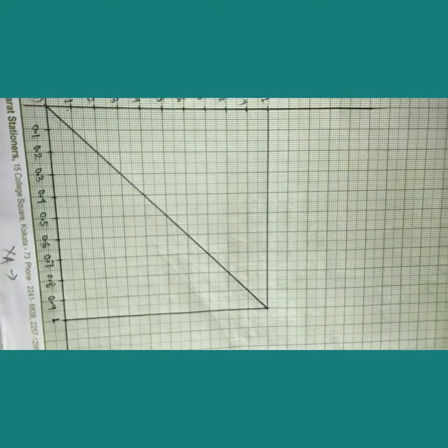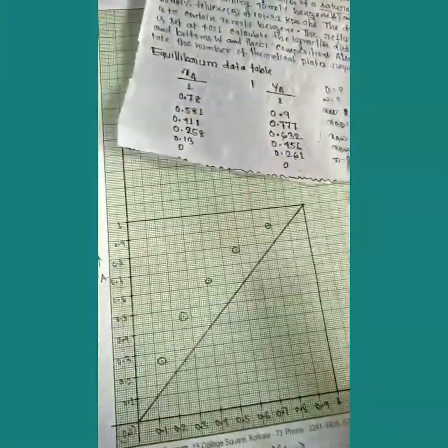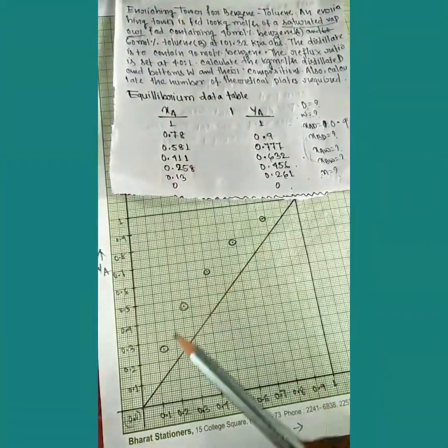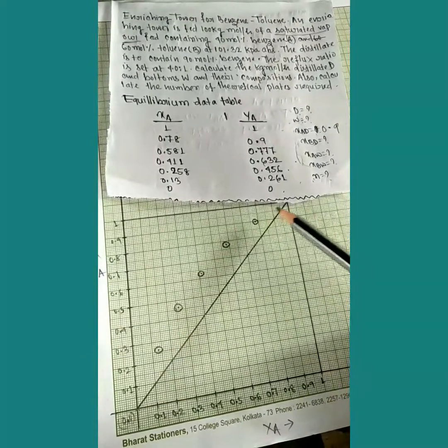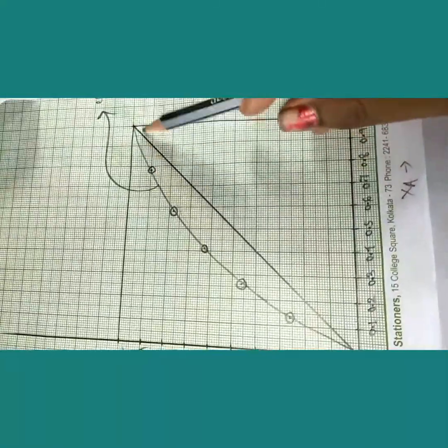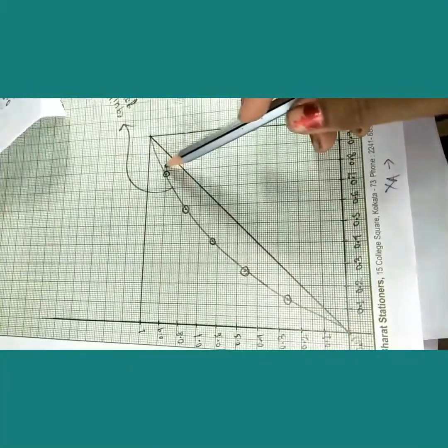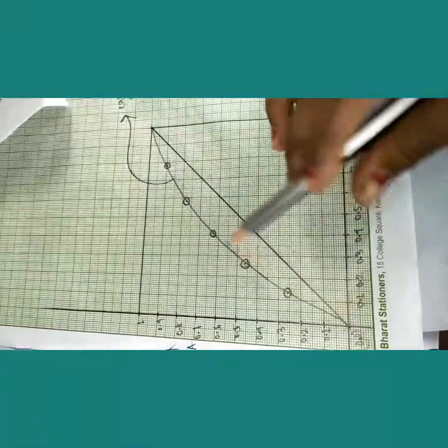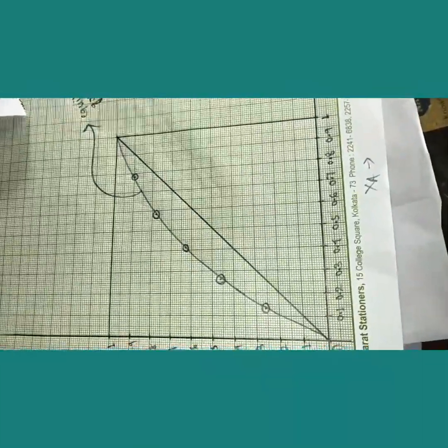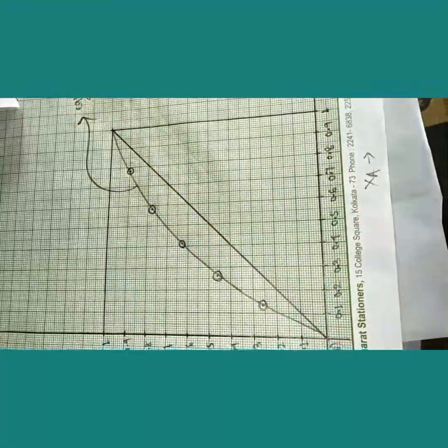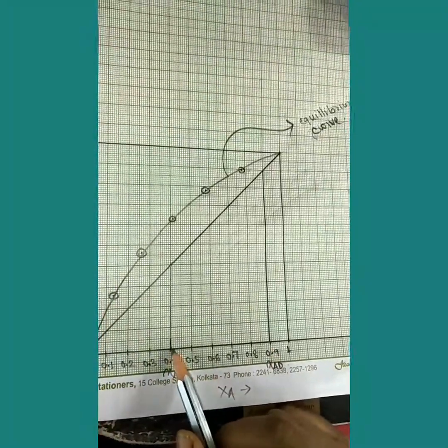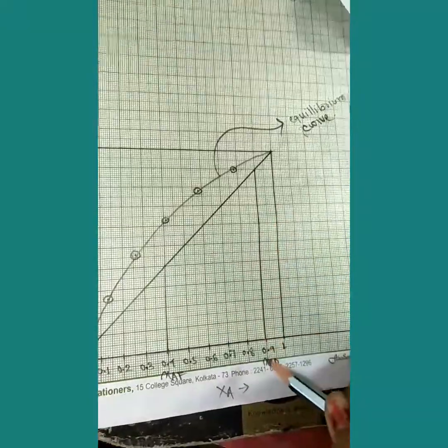After drawing the square box, make a 45-degree line here. Now plot the equilibrium curve by joining the given x-y equilibrium points. Draw the equilibrium curve connecting these points. Then mark the xad value of 0.9 and xaf value of 0.4 and draw vertical lines according to these xa values on the graph.